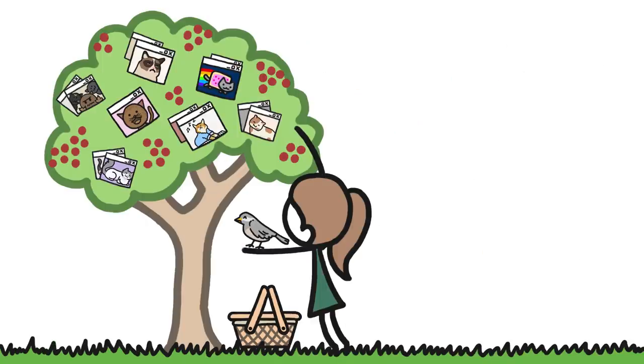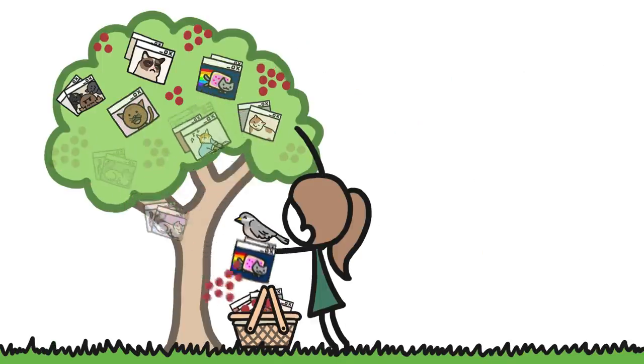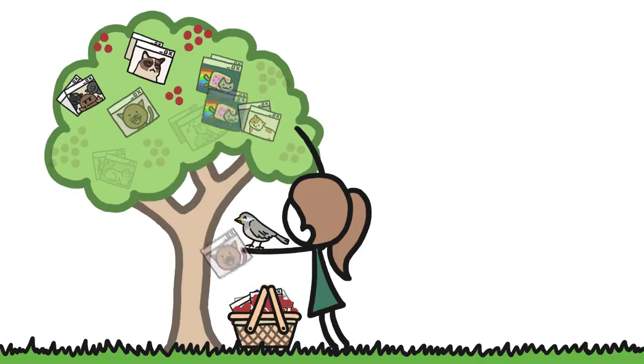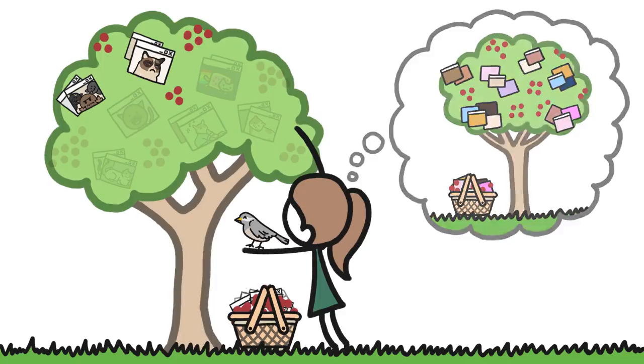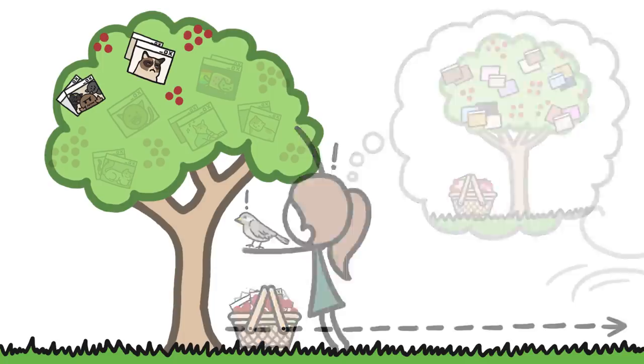Both you and the chickadee will forage in one place until the rate of reward you're getting there drops below what you think you're likely to get elsewhere. This calculation is subconscious, of course. You'll just notice the tree is getting bare and move on.